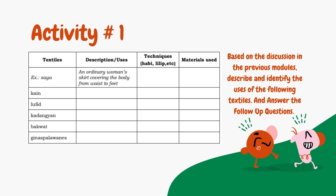Answer the following follow-up questions. Number one: how were you able to describe each textile? Number two: what clues helped you to describe the textile? Number three: what tribe or group usually utilizes it? And number four: was it easy for you to identify and describe each textile? Why or why not?